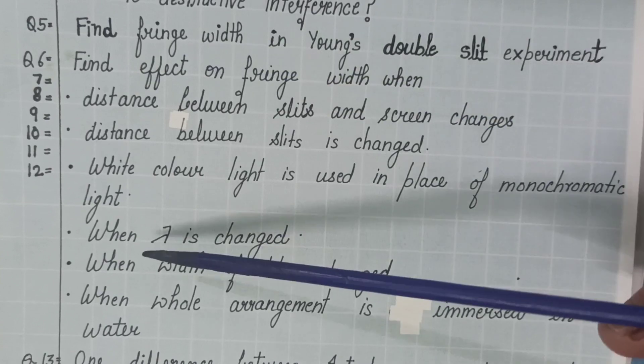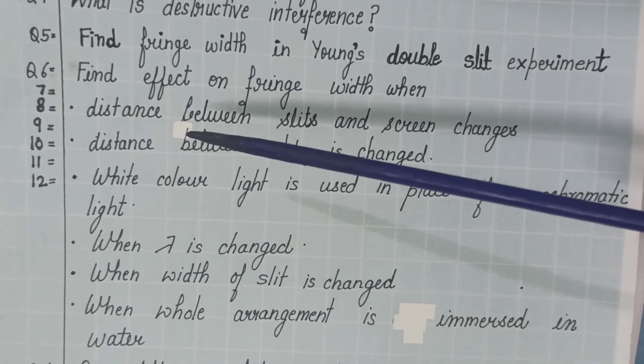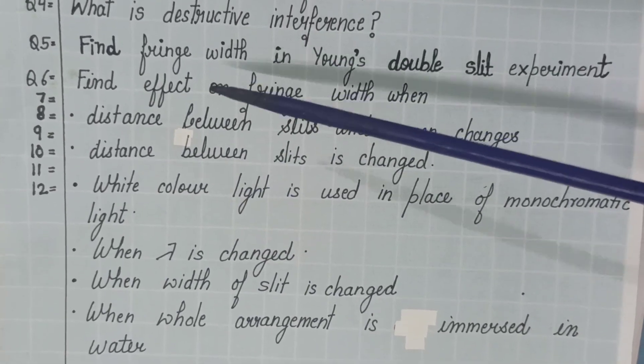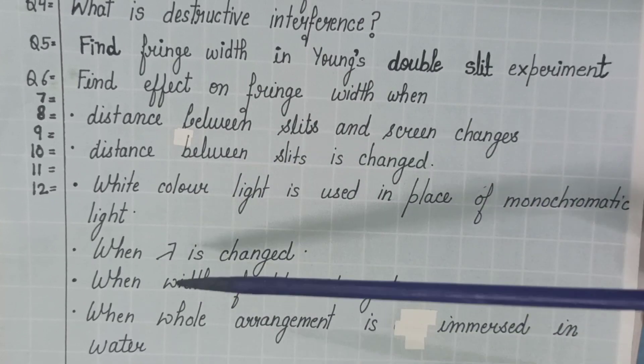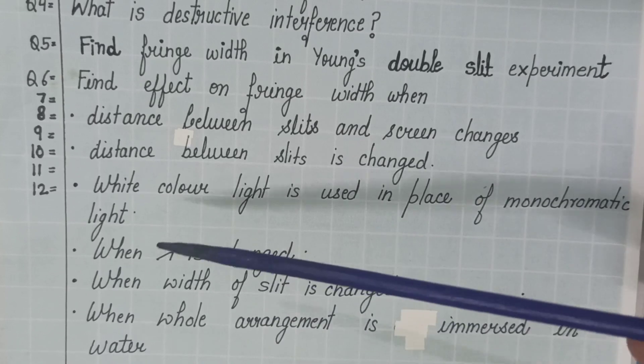Only in place of say red color you start using blue or blue color. In place of blue color you start using the longer wavelength light that is the red color. Then, what will be changed in the fringe width?